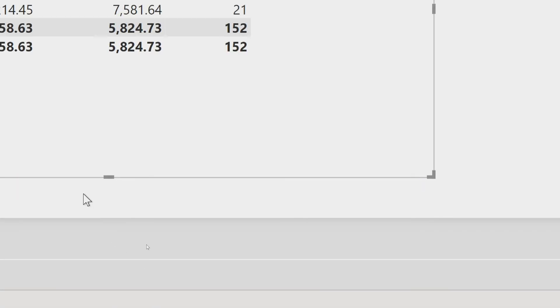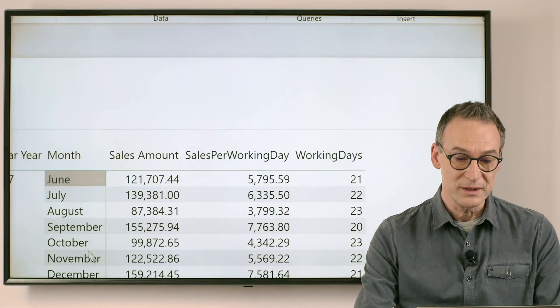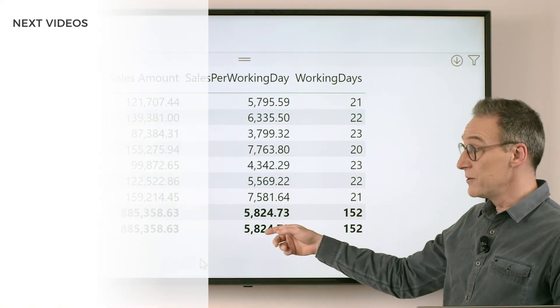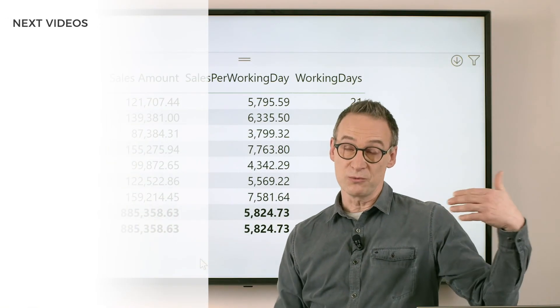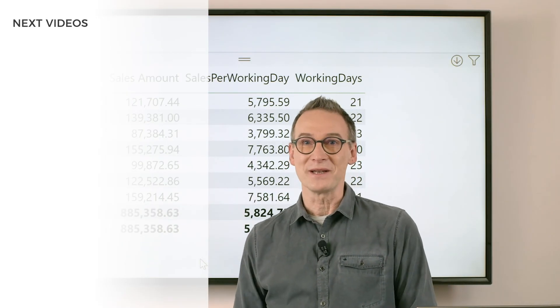If you take a look at the total, it was 261, now it's 152, which happens to be exactly the sum of the values row by row. And of course, my original measure, which divides sales amount by number of working days, is now computing the right number. Have fun with DAX.